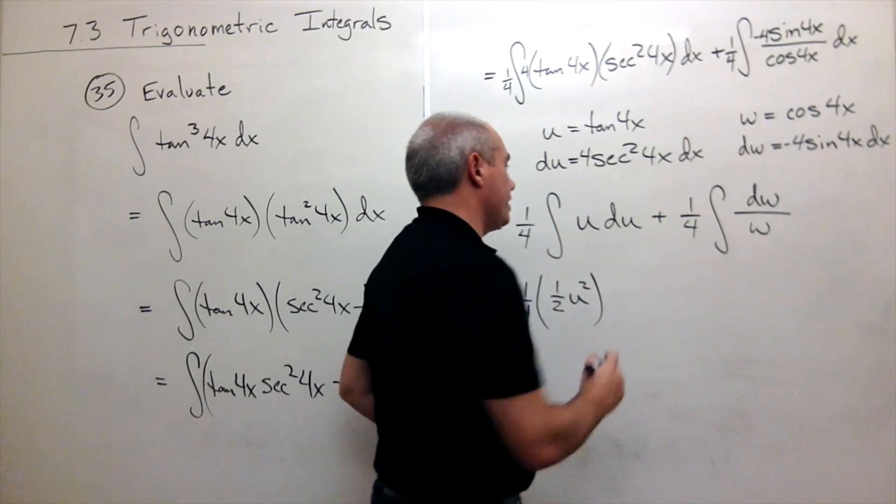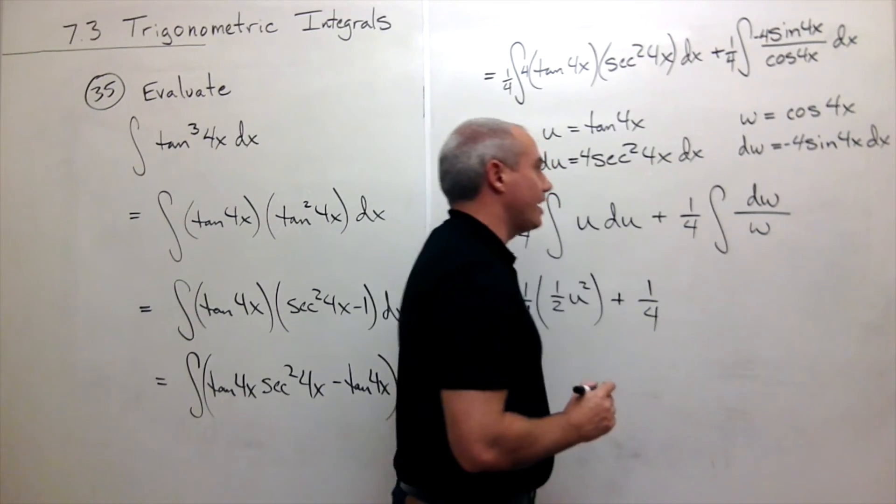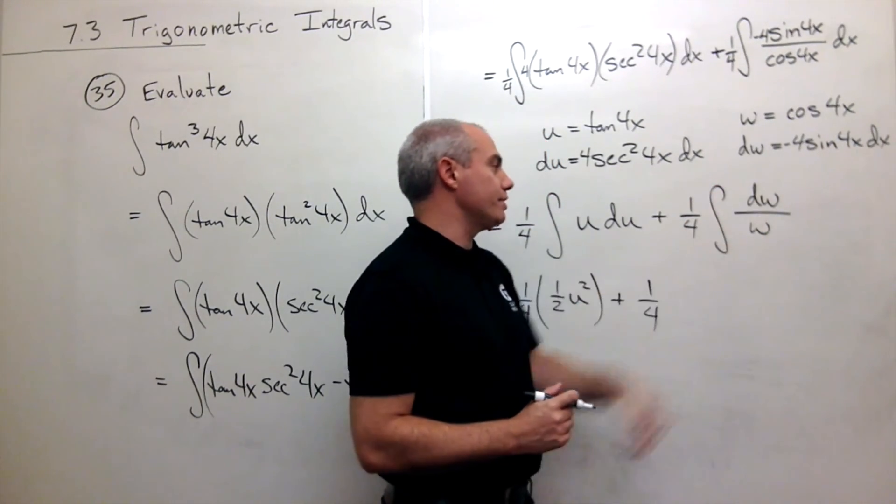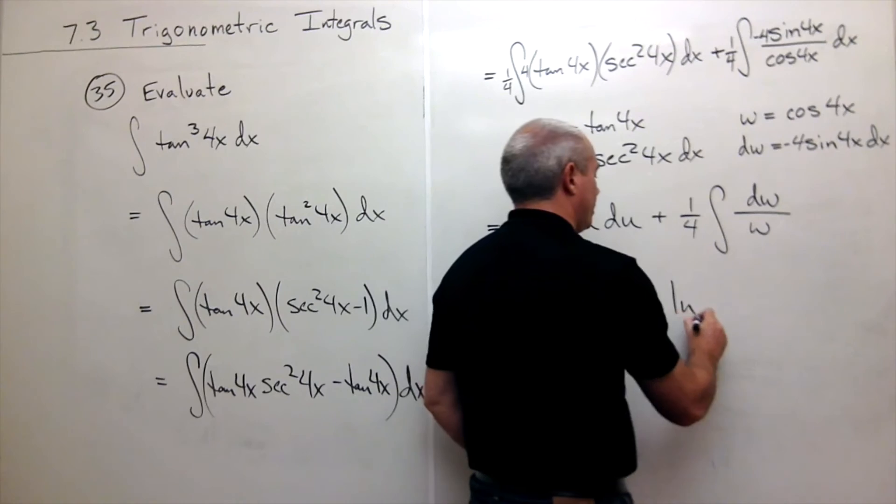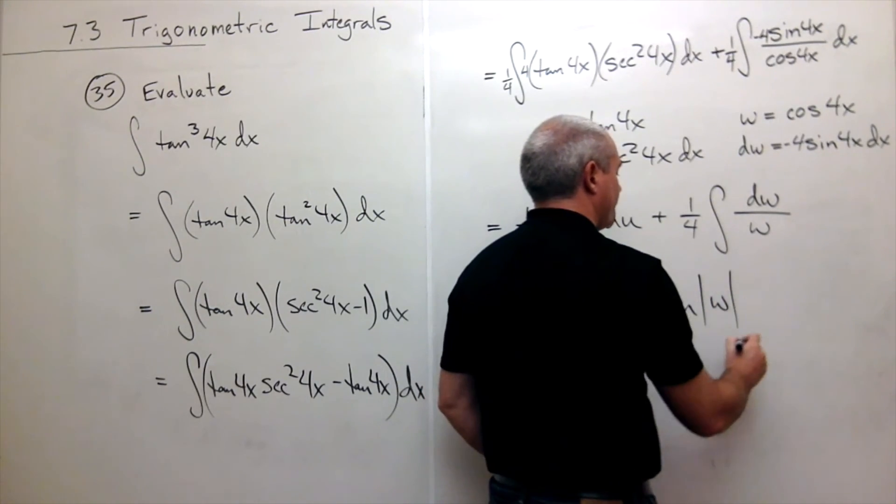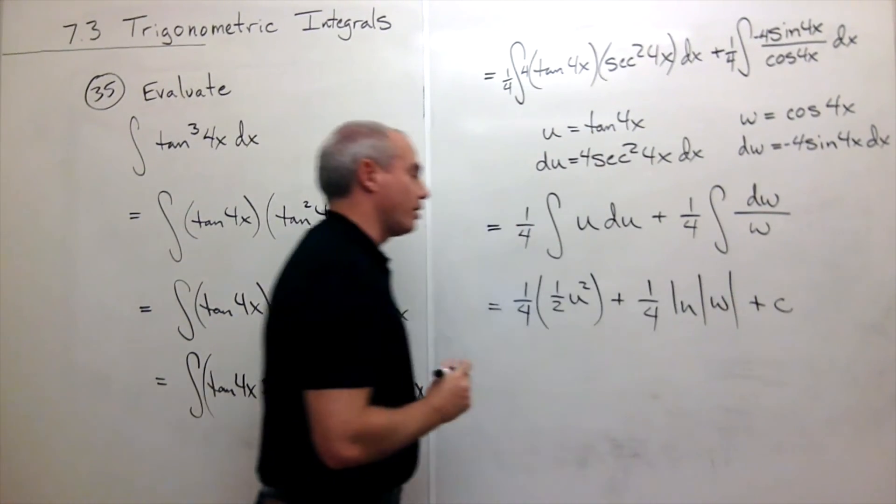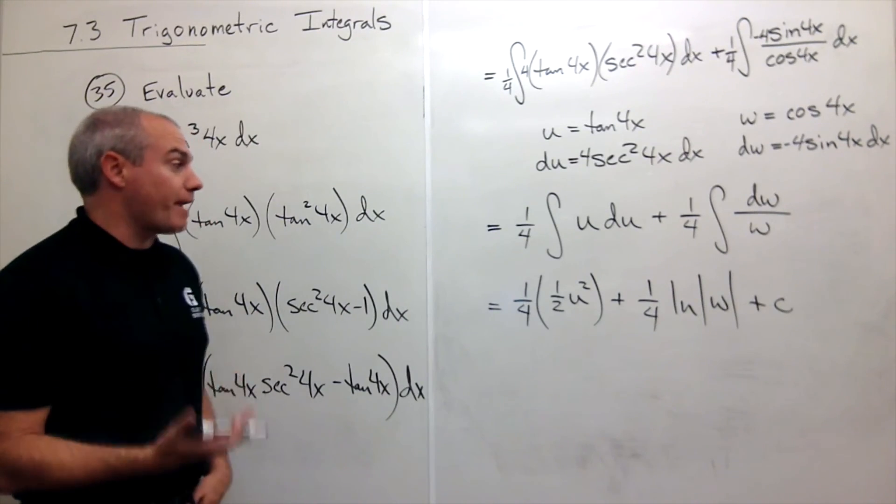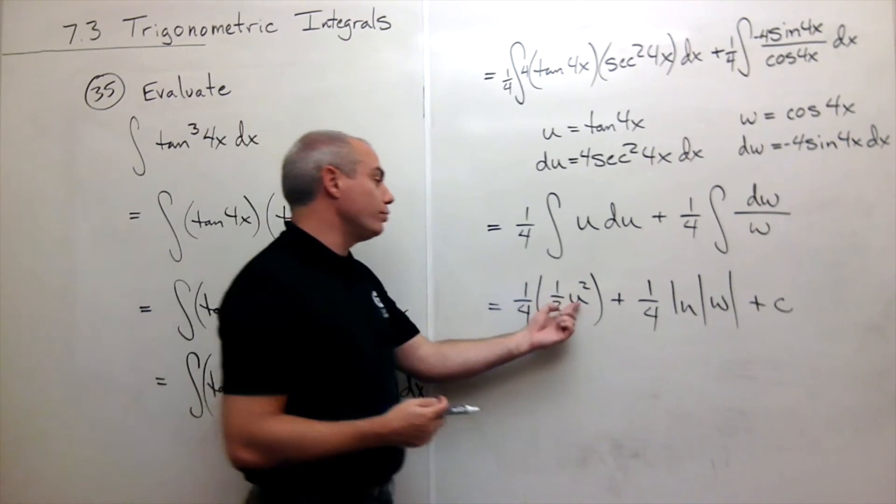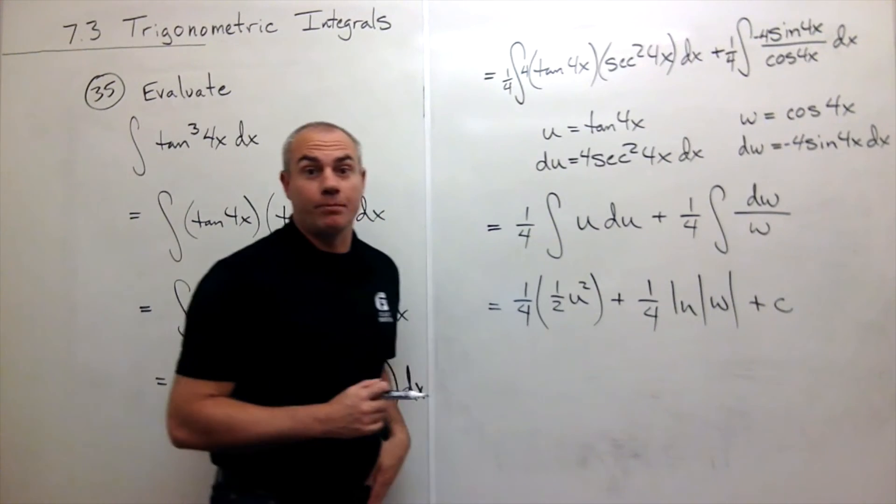Over here I get plus 1 fourth. And the antiderivative of 1 over w dw is ln absolute value of w. And then I have my constant. Now let's just plug back in for what I know that u is and what I know that w is.